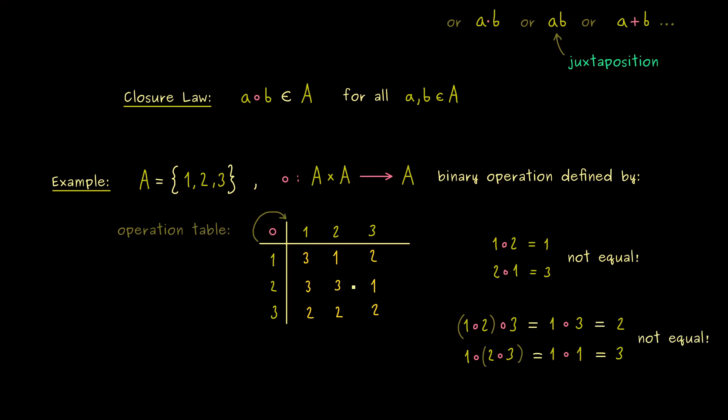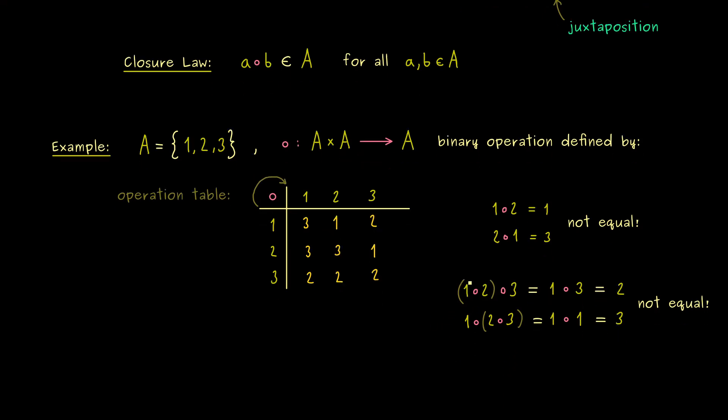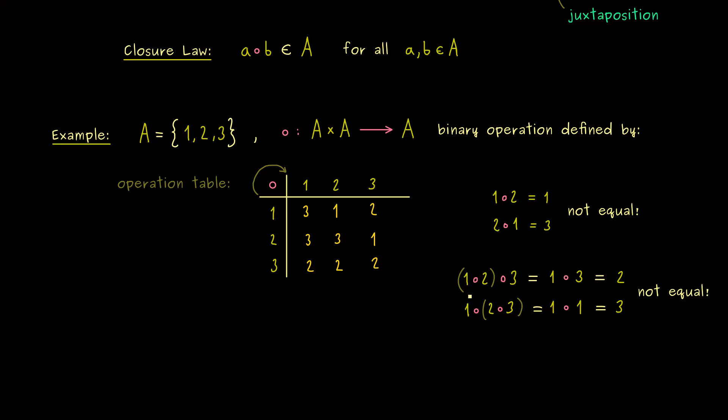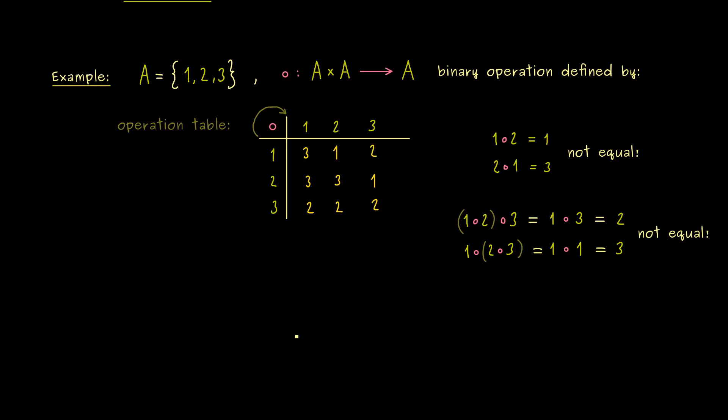However, this is exactly the point of the video, because often we want binary operations where we can omit these parentheses. This means, if we don't change the overall order of the elements here, we should not change the result. And in fact, this property we call associativity. And this immediately brings us to the notion of a semigroup.